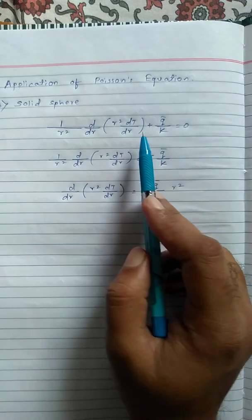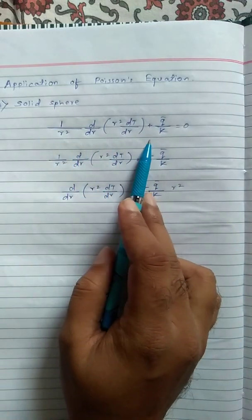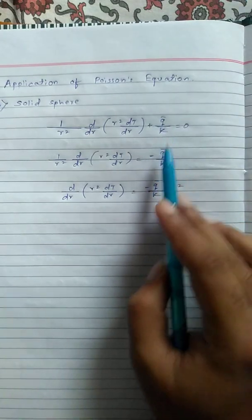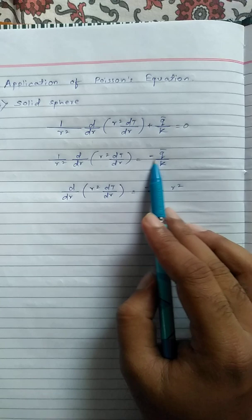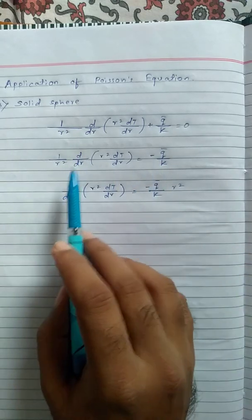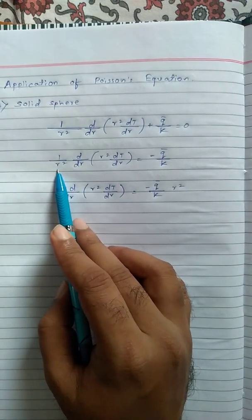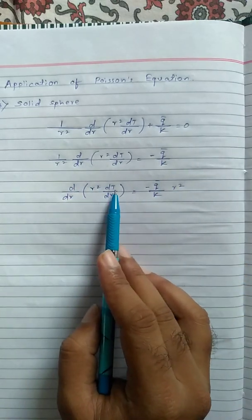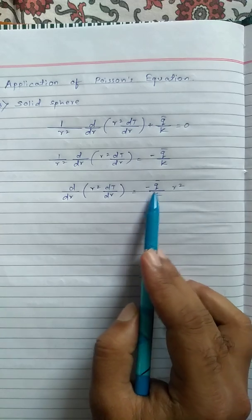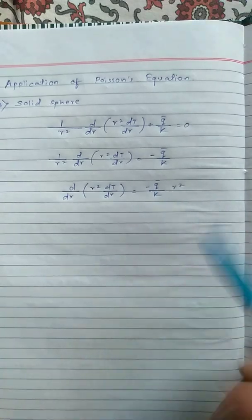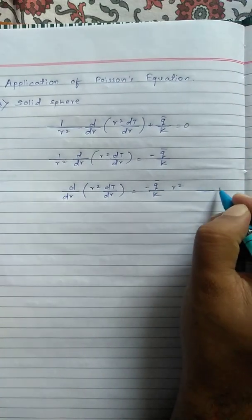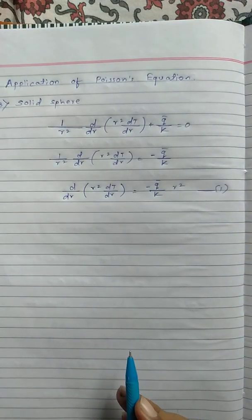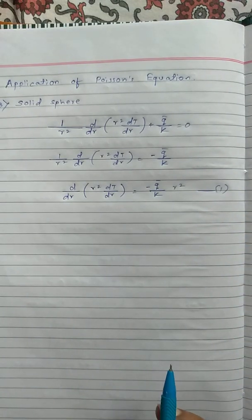Rearranging this equation, we take the q̄/k term to the right-hand side, so it becomes minus q̄/k. Then we multiply both sides by r², giving us: d/dr [r² dT/dr] = -q̄/k · r². These are the steps we perform for simplification to find the temperature profile and slope.